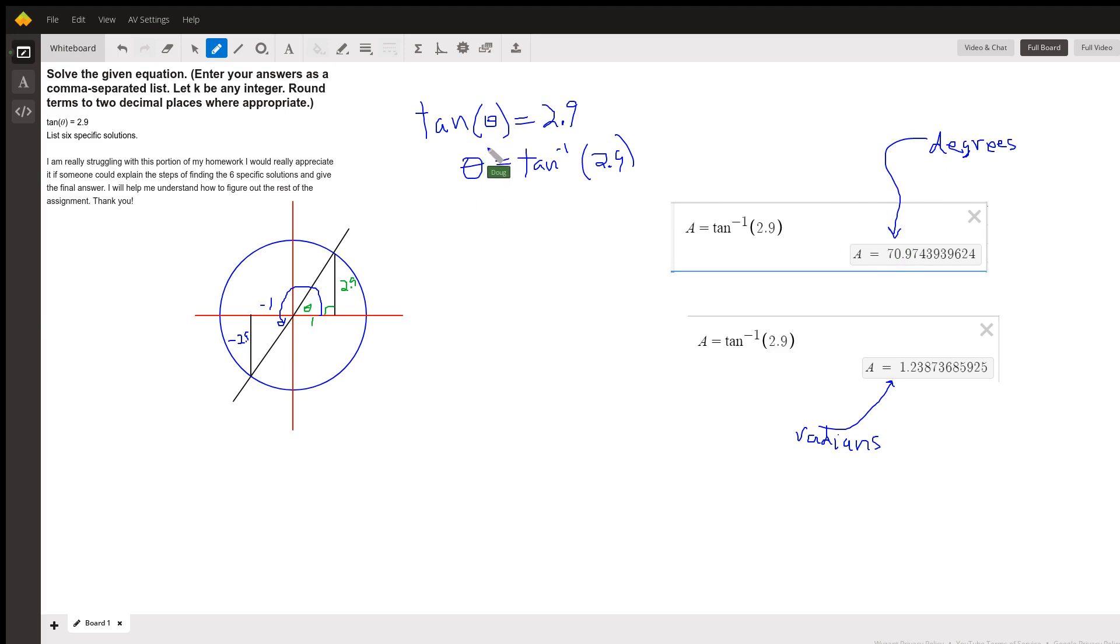theta is the angle that has a tangent of 2.9, or the inverse tangent of 2.9. Or you can use arc tangent of 2.9.